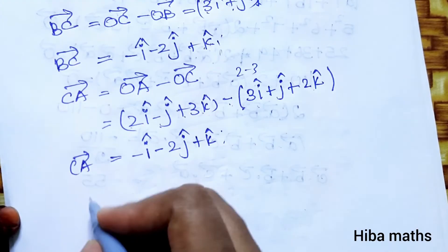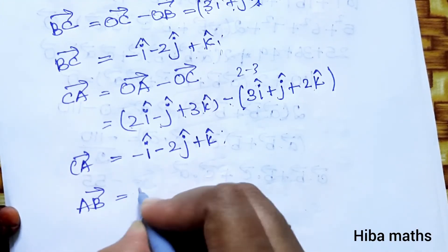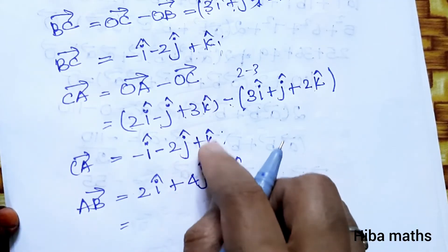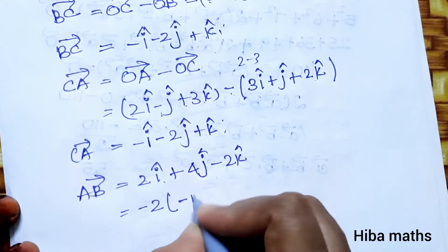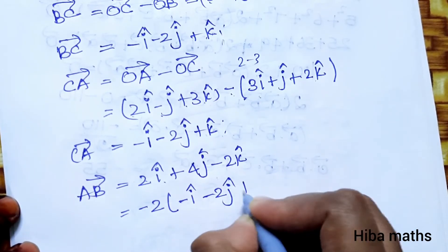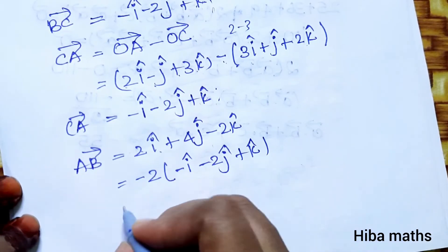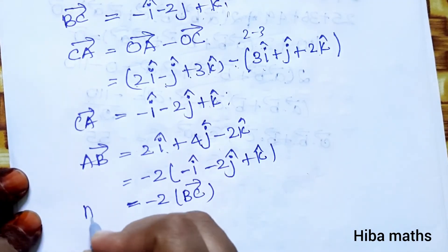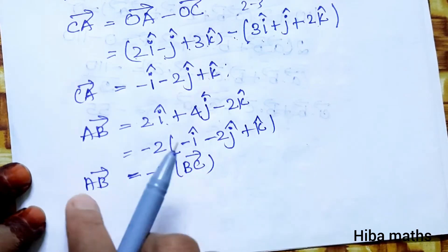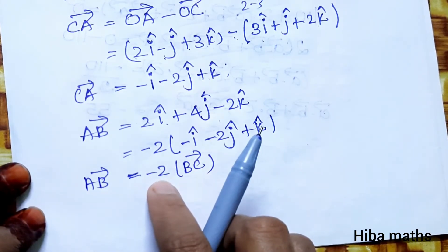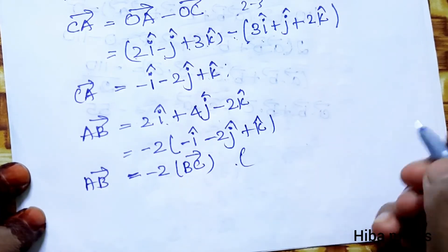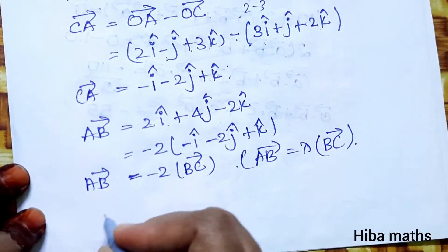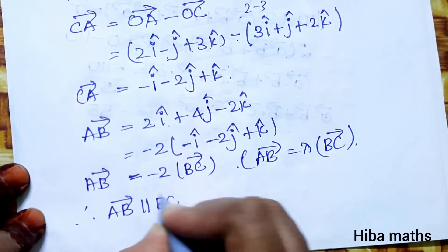BC vector = -i - 2j + k. AB vector = 2i + 4j - 2k. Now we compare: AB = -2(-i - 2j + k) = -2(BC vector). So AB vector = λ(BC vector), where λ = -2. Therefore, AB vector is parallel to BC vector.